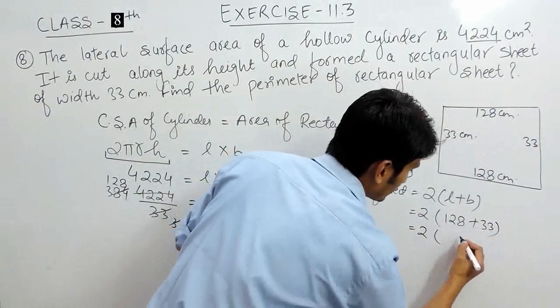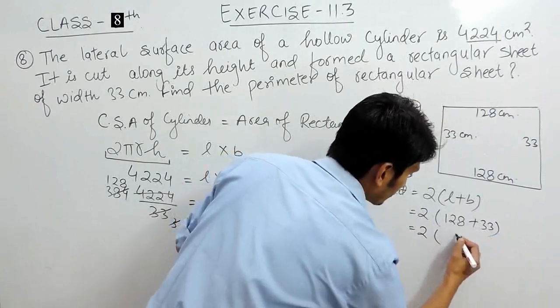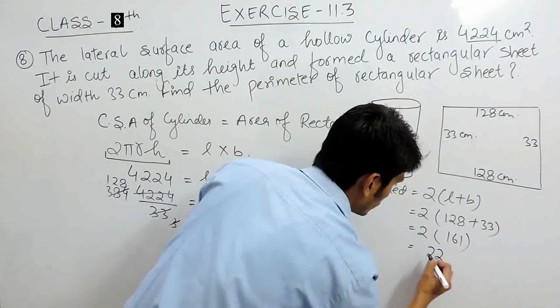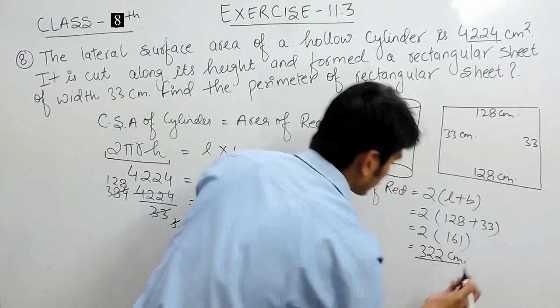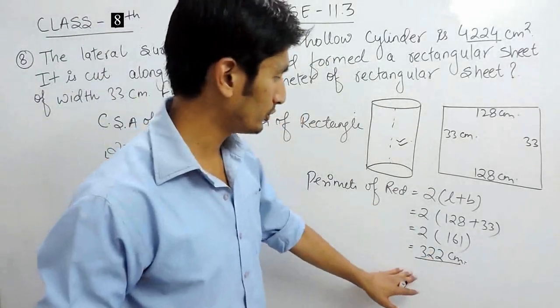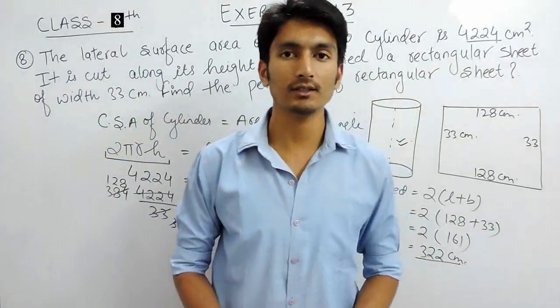This will be 8 plus 3 is 11, 3 plus 5 is 6, 1 and this will be 2 cm. So the perimeter of the rectangle so formed should be equal to 322 cm. Thank you.